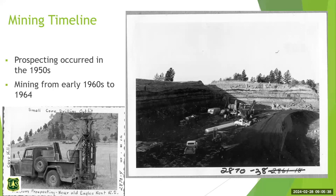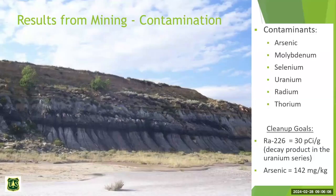Mining first occurred at the site with prospecting in the 1950s, and then strip mining happened from the early 1960s to 1964. They pushed off the overburden on top of the bluff — either to the bluff edge or over the bluff edge — to get to the black lignite beds. This was all done before modern reclamation laws, so when they stopped mining, they just walked away and left it as-is.